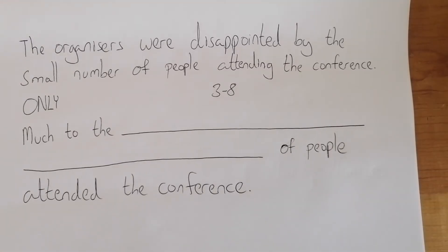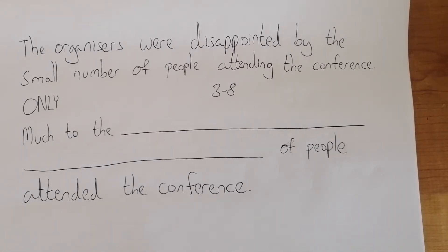Here we go with another keyword transformation at C2 level. It says the organizers were disappointed by the small number of people attending the conference. We've got to use a minimum of three and a maximum of eight words, and the word we have to use is 'only'.